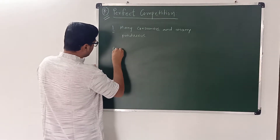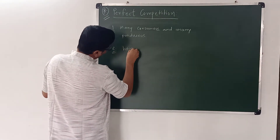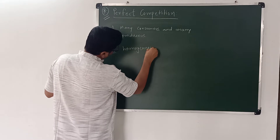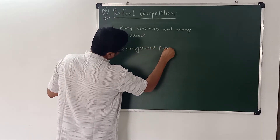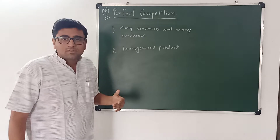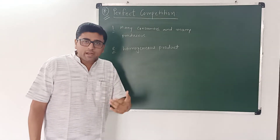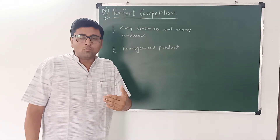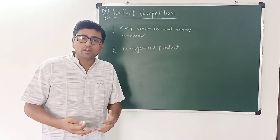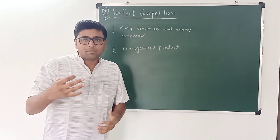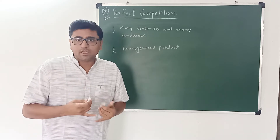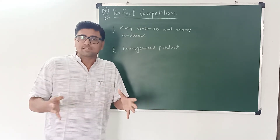Second, homogeneous product. The producers are selling a homogeneous commodity in the market. So quality, shape, color, pattern — everything is the same.